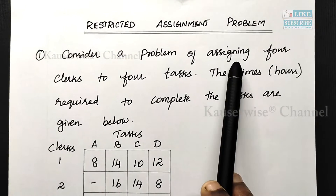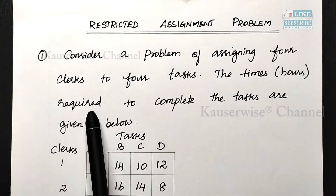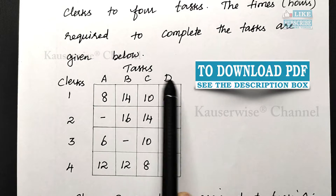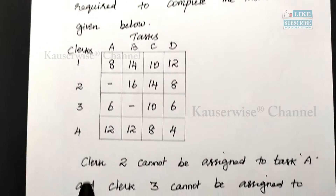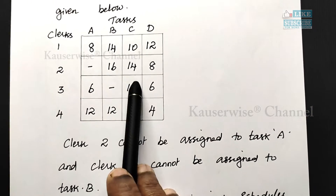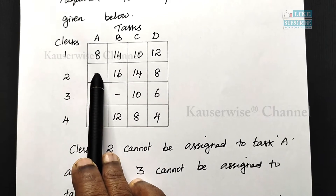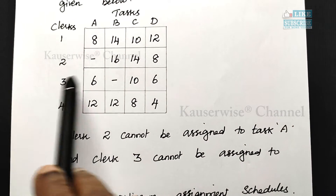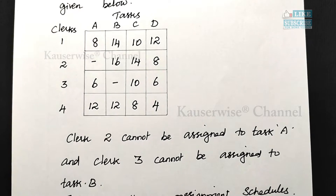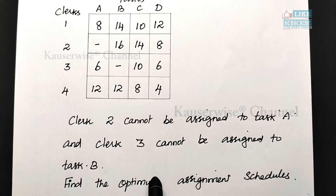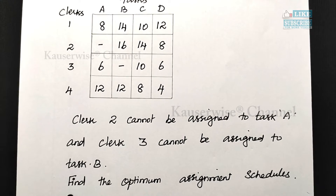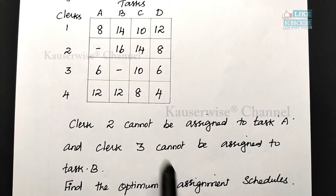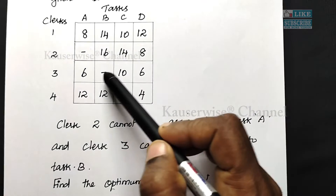Consider a problem of assigning 4 clerks to 4 tasks. The time in hours required to complete each task is given in the matrix. There are 4 clerks — 1, 2, 3, 4 — and 4 tasks — A, B, C, D. The two restrictions are: Clerk 2 cannot be assigned to Task A, and Clerk 3 cannot be assigned to Task B. In the matrix, those cells are left blank to indicate the restriction. With this information, you need to find the optimum assignment schedule.